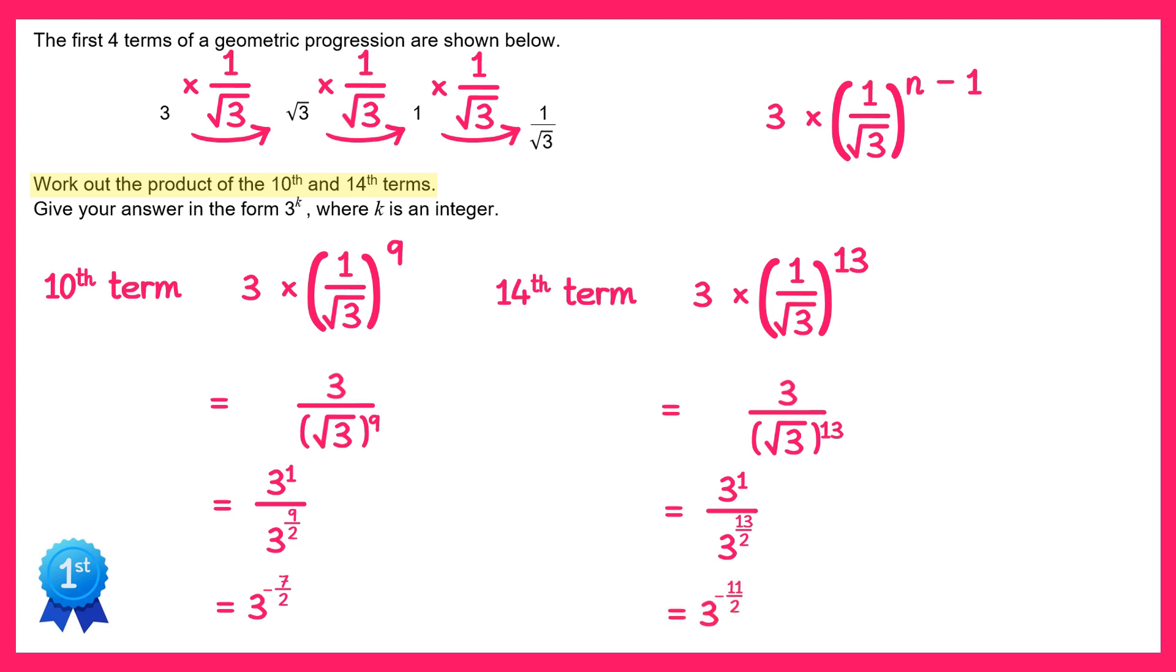So we've found the 10th and 14th terms as a power of 3. The question asks for the product of these so we need to multiply them together. So 3 to the negative 7 over 2 times 3 to the negative 11 over 2. When you multiply these you would add the indices, so negative 7 over 2 add negative 11 over 2 is the same as negative 18 over 2. And negative 18 over 2 is the same as negative 9.